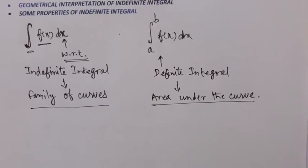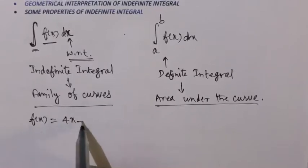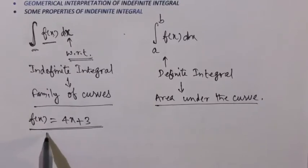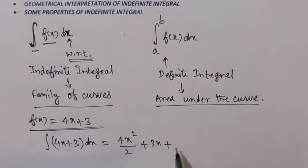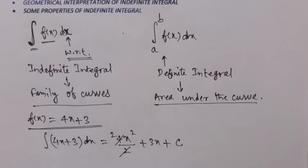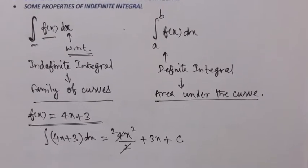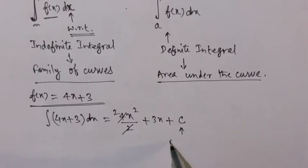For example, if you have f(x) = 4x + 3, its integration will give 4x²/2 + 3x + c. So 4x becomes 4x²/2, and 3 becomes 3x, plus a constant of integration c. We will understand the process in detail as we proceed.